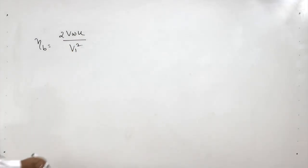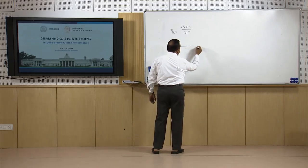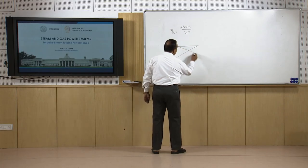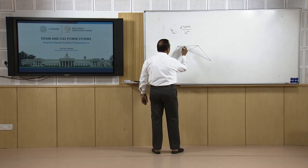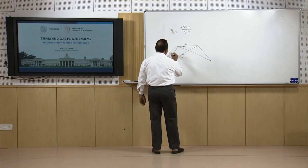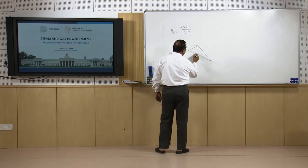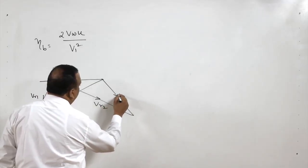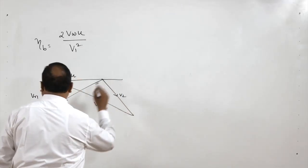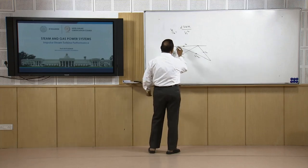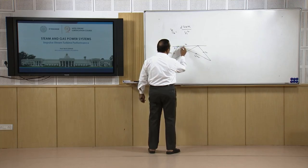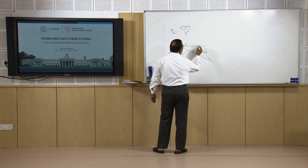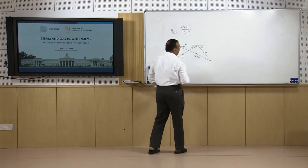Vw is the whirl component of the velocity diagram. In this velocity diagram, V1 is the absolute velocity at inlet, u is the peripheral velocity of the rotor, Vr1 is the relative velocity at inlet, Vr2 is the relative velocity at outlet, and V2 is the absolute velocity at outlet. The angles are: blade inlet angle, blade outlet angle, nozzle inlet angle, and nozzle outlet angle.